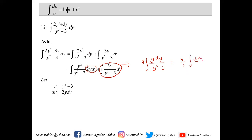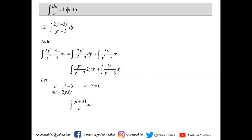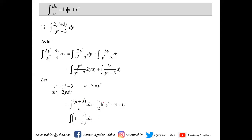Continuing method 1: since u equals y² − 3, then y² equals u + 3. For the first term, replacing y² with u + 3 in the numerator and y² − 3 with u gives the integral of (u + 3)/u du, which splits into integral of 1 du plus 3/u du, equaling u + 3 ln(u). The second term gives three-halves ln(y² − 3). Combining and writing back: (y² − 3) + 3 ln(y² − 3) + three-halves ln(y² − 3) plus c.